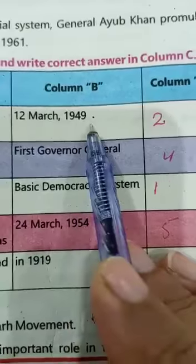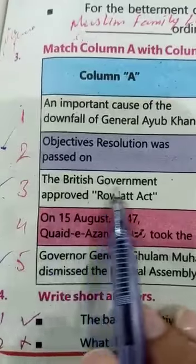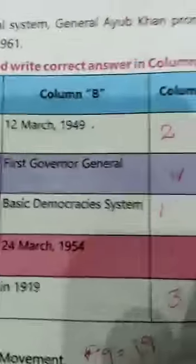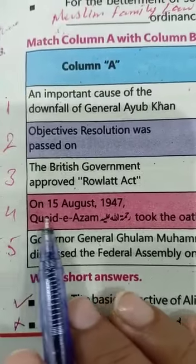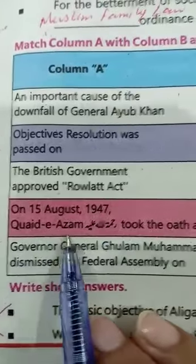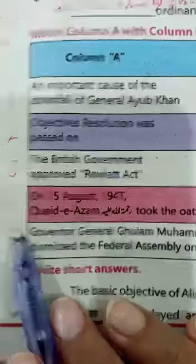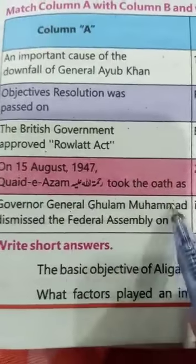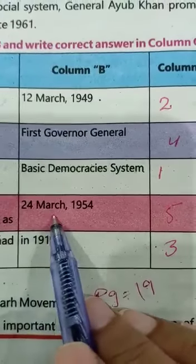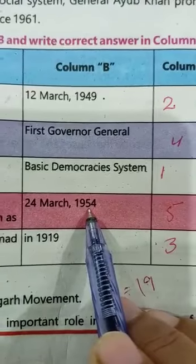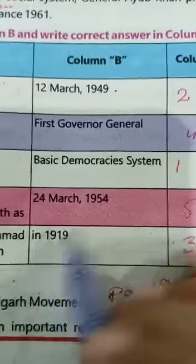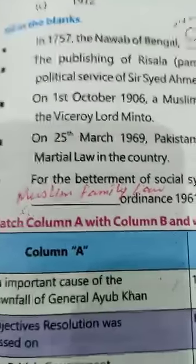Number three: The British government approved the Rowlatt Act in 1919. Number four: On 15 August 1947, Quaid-e-Azam (Rahmatullah Alaihi) took the oath as the first Governor General. Number five: Governor General Ghulam Muhammad dismissed the Federal Assembly on 24 October 1954. These are the answers for the column matching. You are to learn all of this by heart for Class 8.